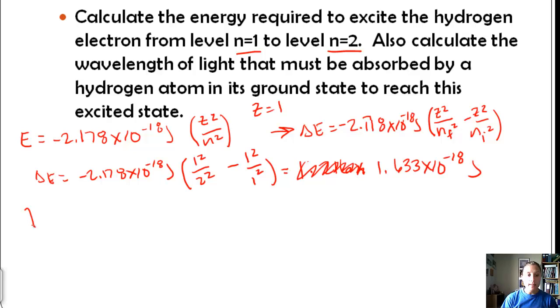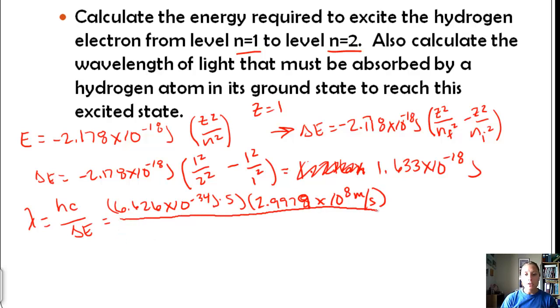Now let's compare that to finding the wavelength. So the wavelength is equal to Planck's constant times the speed of light divided by that change in energy. Planck's constant is 6.626 times 10 to the negative 34 joules. Take that times our speed of light, which is 2.9979 times 10 to the 8th meters per second. And then we're going to divide that by our change in energy, our 1.633 times 10 to the negative 18 joules. And that gives us 1.216 times 10 to the negative 7 meters. So that's our wavelength of energy emitted when it jumps from level 1 to level 2.